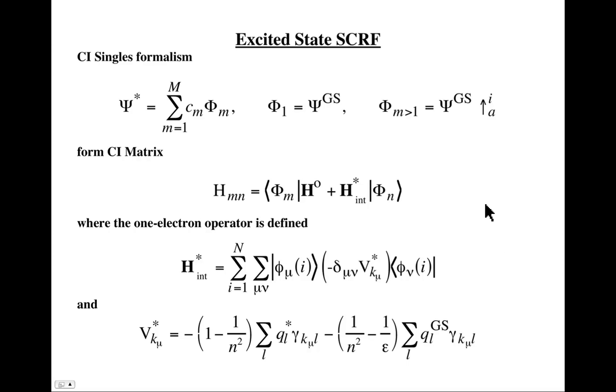To give you a feel for how you might implement this in an excited state formalism within, say, CI singles, we have our wave function for the excited state is a linear combination of singly excited determinants. I'll index the ground state by 1 here, and then all the higher states involve singly excited determinants relative to the ground state. We would do the usual thing: form a CI matrix and diagonalize it, except that now the Hamiltonian is not just the gas phase Hamiltonian, but there's this interaction term.